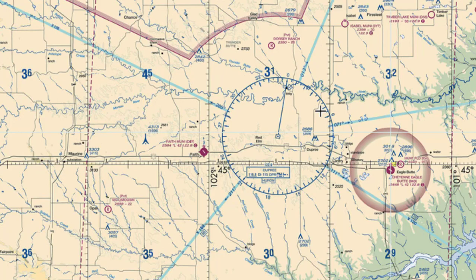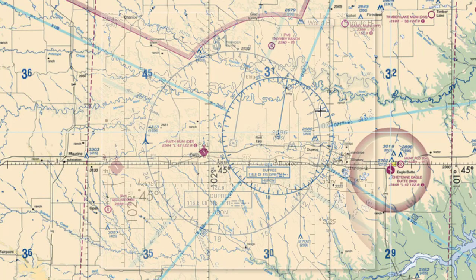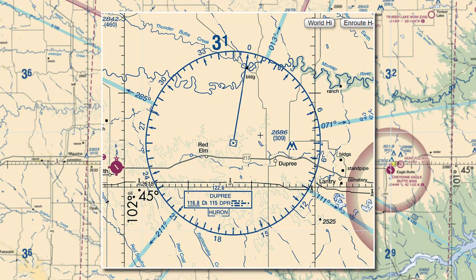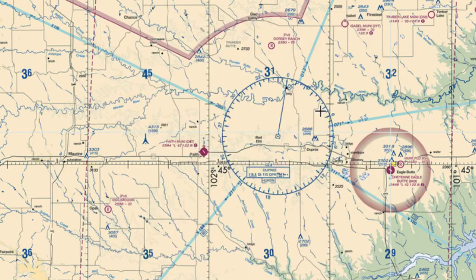In this second example, we are going to reference the Dupree VOR station. We will set NAV1 to its frequency, which is 116.8. The radial we are going to reference for this example is the 280 degree radial.